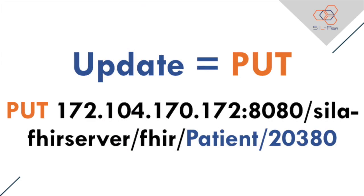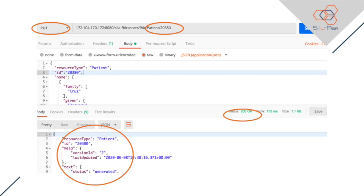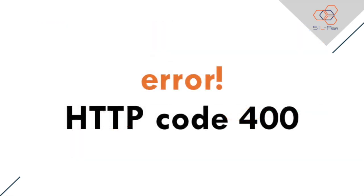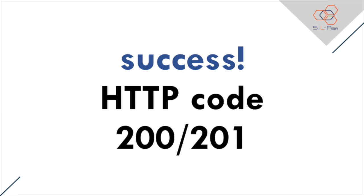For updating the current contents of a resource, we send an HTTP PUT request to the resource type's respective endpoint. The update interaction creates a new current version for an existing resource, or creates an initial version if no resource already exists for the given ID. The request body shall be a resource with an ID element that has an identical value to the ID in the URL. If no ID element is provided or the ID disagrees with the ID in the URL, the server shall respond with an HTTP 400 error code and should provide an operation outcome identifying the issue. If the interaction is successful, the server shall return either a 200 OK if the resource was updated, or a 201 Created status code if the resource was created or brought back to life.